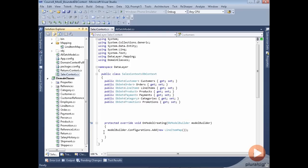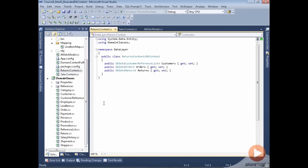But what about when I'm building the returns part of the application? My context that involves returns only has customers, orders, and returns because those are the classes that will be involved. But look at this returns context. I don't have a DB set of customer. I have a DB set of customer reference list.